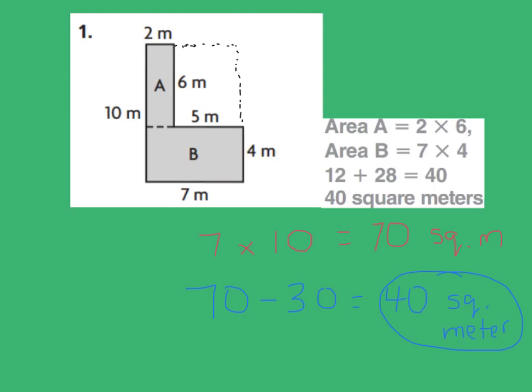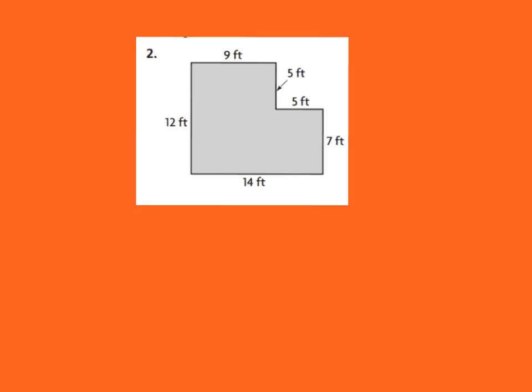So either way you can get that answer. You can do way number one, which is add up both areas of your two rectangles that are combined. Or you can make an imaginary rectangle and subtract the part that's not really part of your combined rectangles. Either way you'll get the same answer. So let's go on to another one. Step number one if we're going to find the area of combined rectangles is we have to make two rectangles, so you can just make a dotted line here.